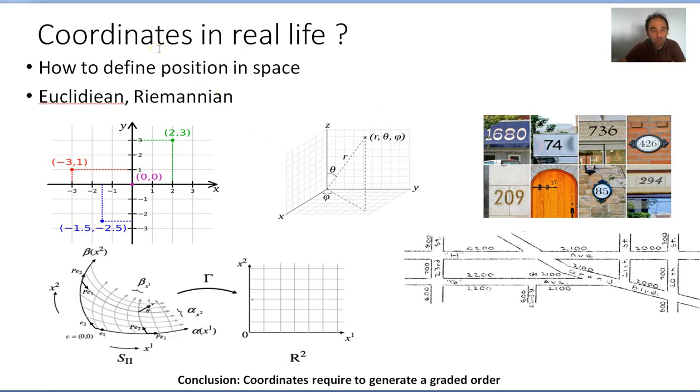Coordinates are well known in schools, as we learn, starting from the classical Euclidean coordinates. You have the x-axis and the y-axis. If you want to know where a point is, you just have to give the x-coordinate and the y-coordinate. And why does it work?